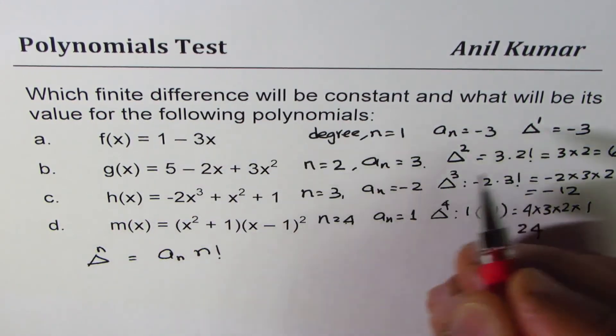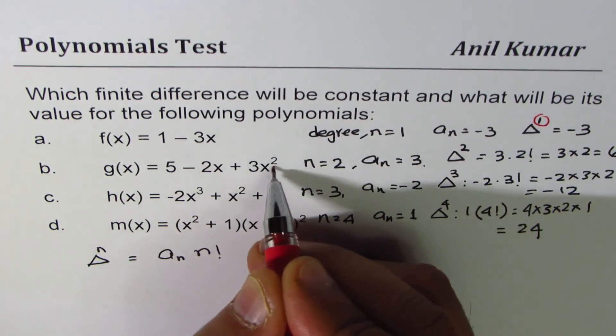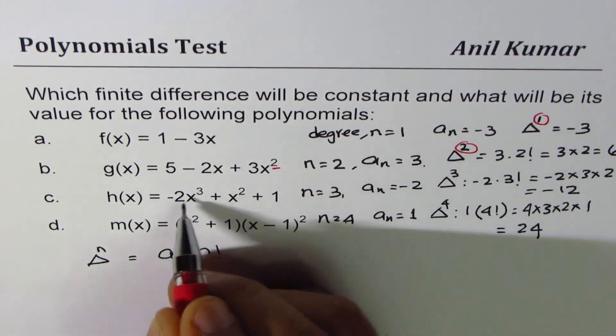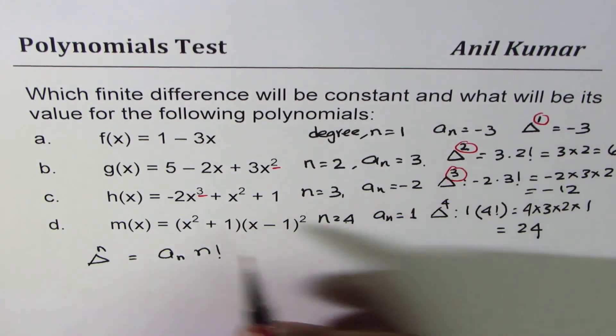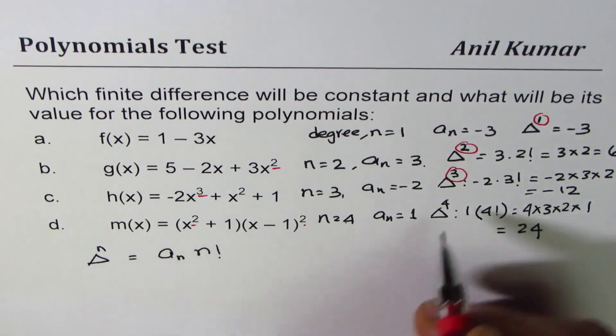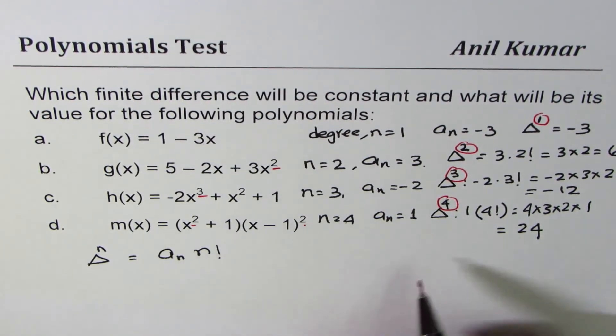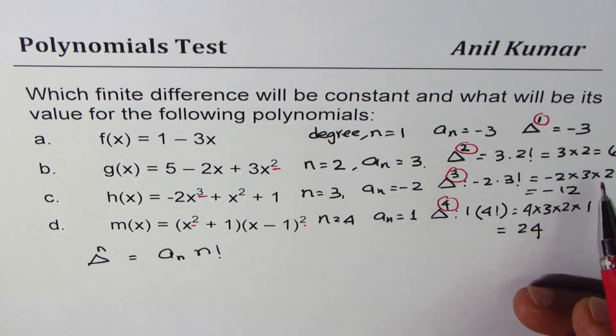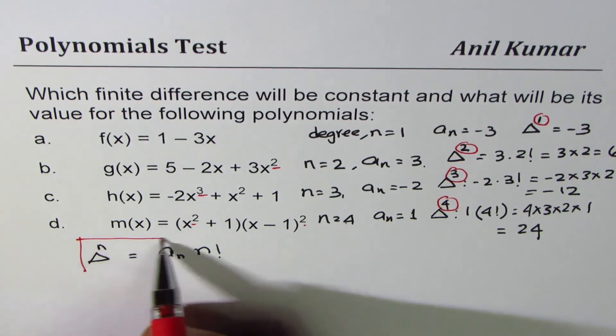So here, first finite difference is constant, then degree 2, second finite difference, degree 3, third finite difference, degree 4, 2 times 2, 4, 2 plus 2 I should say.